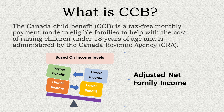So what is CCB? The Canada Child Benefit, also called CCB, is a tax-free monthly payment made to eligible families to help raise their children under 18 years of age. This is administered by the CRA, which is the Canada Revenue Agency. These benefits are completely based on income levels — the higher your income, the lower the benefit you get, and the lower your income, the higher the benefit.